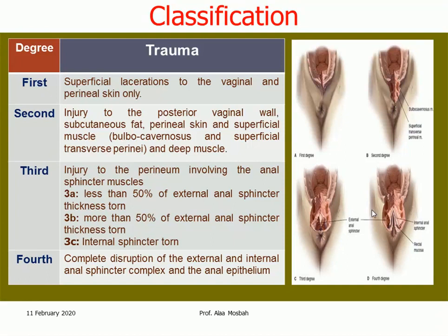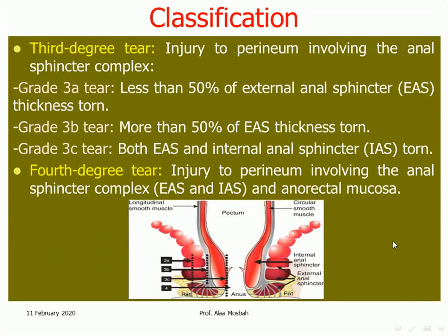Fourth degree includes tear in the vaginal mucosa, perineal skin, perineal muscle, external and internal anal sphincter, and anal or rectal mucosa. The third degree is subdivided into 3A, 3B, and 3C. The fourth degree involves injury to the perineum involving the entire anal sphincter complex — external and internal anal sphincters — and the anorectal mucosa.